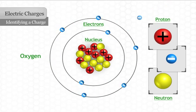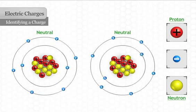If the atoms of an object have an equal number of protons and electrons, that object has a neutral electric charge.